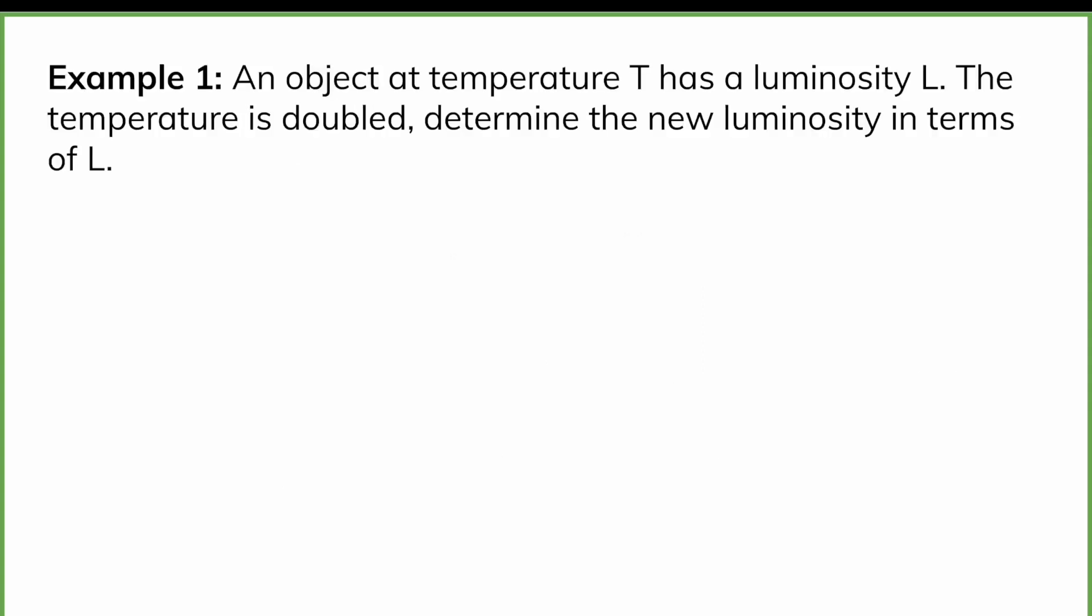In this question, we have an object at temperature T and luminosity L. Then the temperature is doubled to determine the new luminosity in terms of L. So what I like to do when I have these types of questions is we have a T and an L, and I can write the Stefan-Boltzmann law for this first object here. So L is equal to sigma A T to the power of 4. So that's using the Stefan-Boltzmann law.